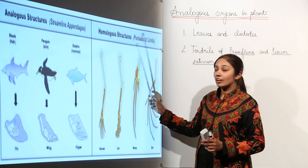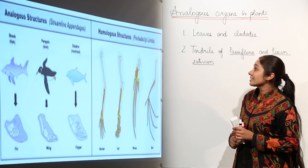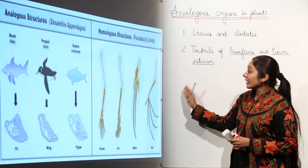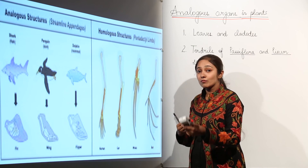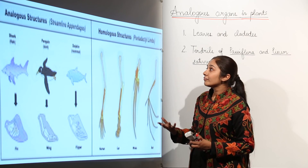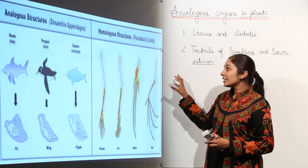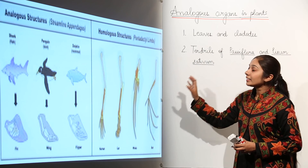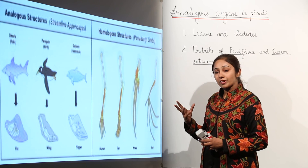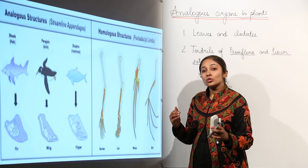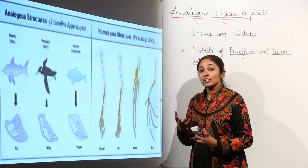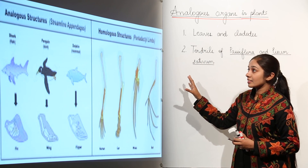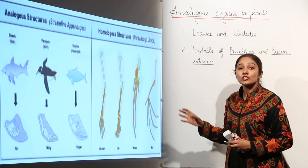So the major difference is: homologous organs show similarity in basic structure but different functions, while analogous organs show the same functions but different basic structures. These evidences lay the foundation for the origin of life and evolution. Homologous structures convey that organisms had one common ancestor, while analogous organs convey that organisms had different ancestors but, due to natural selection and adaptations, evolved the same functions. This is how analogous and homologous organs give evidence for evolution.